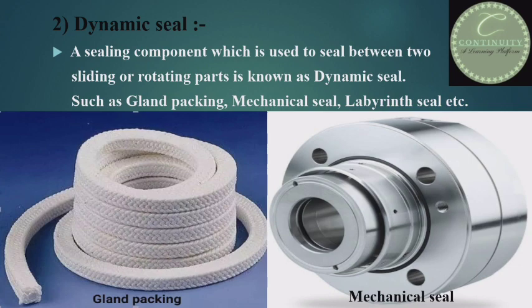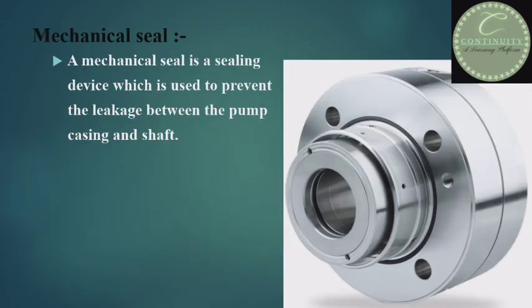That is a brief introduction to seals. Now, coming to the main topic — the mechanical seal. A mechanical seal is a sealing device which is used to prevent leakage between the pump casing and shaft. It is installed in the stuffing box of a centrifugal pump.